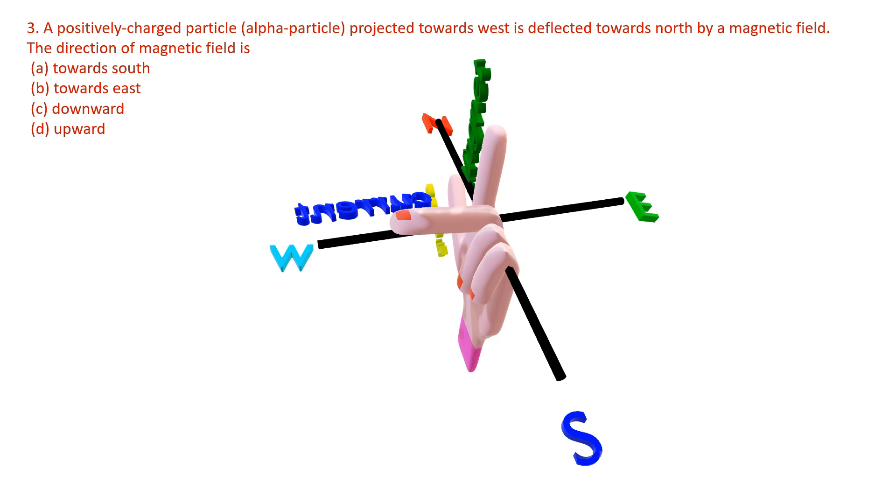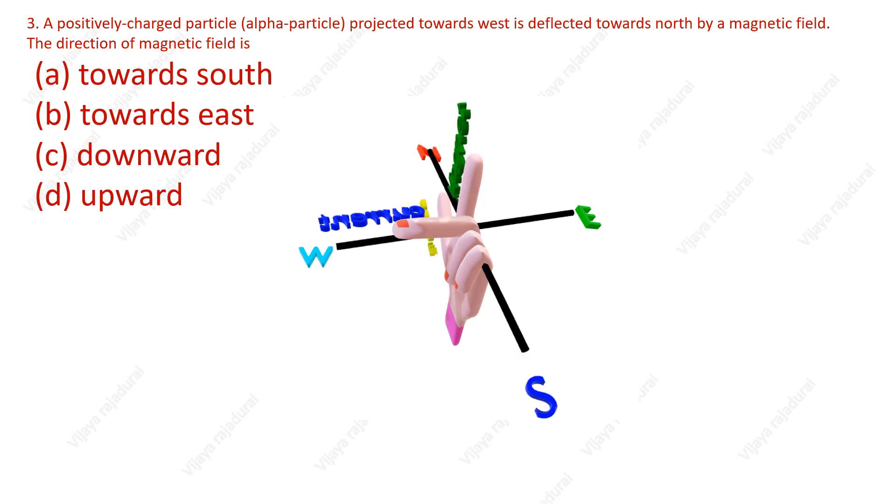Here the magnetic field direction facing upwards. Now, you can clearly say the answer without any confusion, that is the direction of the magnetic field is upward.